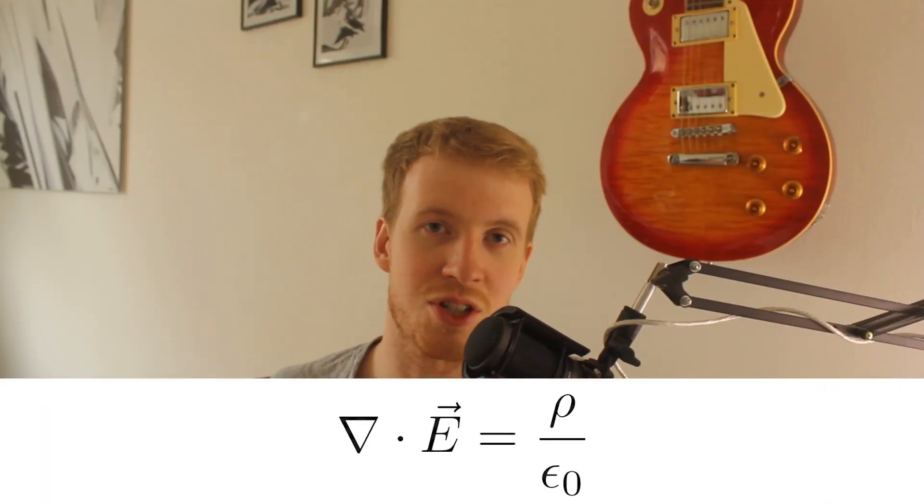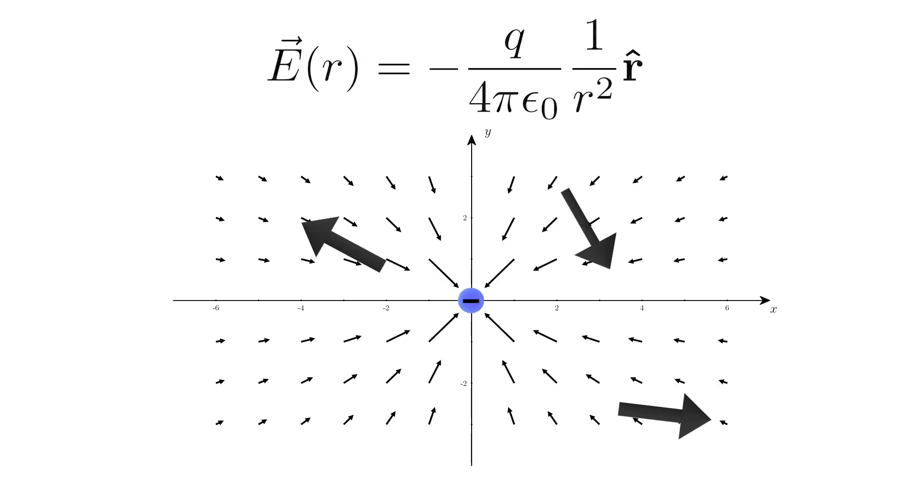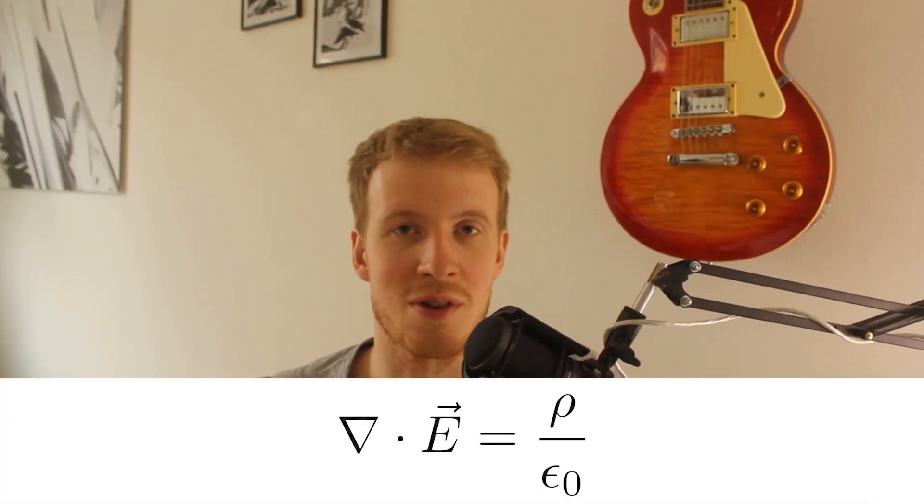And this is what this equation means. Everywhere we don't have a charge, the divergence is 0. So here is 0, here is 0, here is 0. But here we have a charge. And so the divergence equals the charge density over epsilon 0.